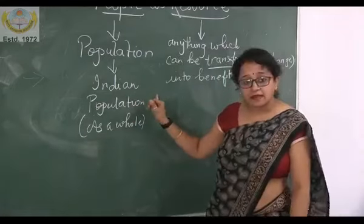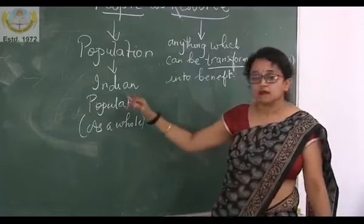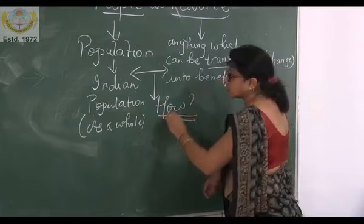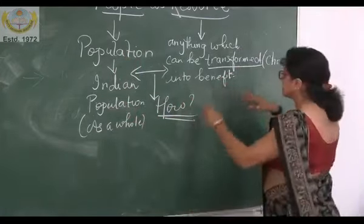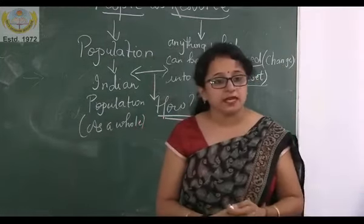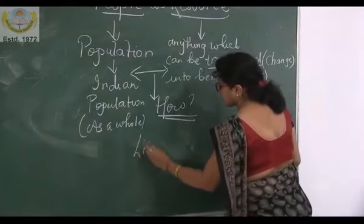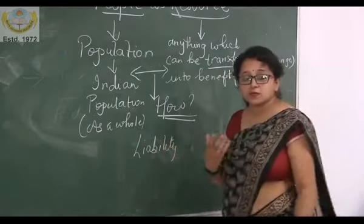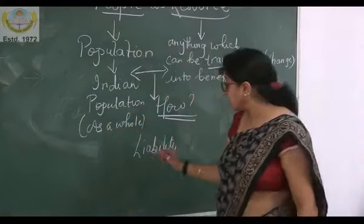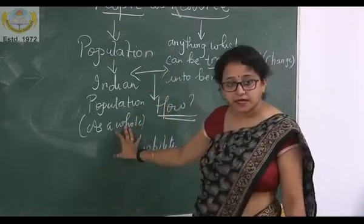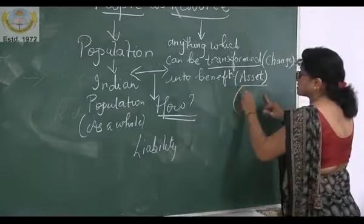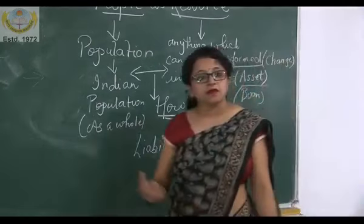We are going to understand how we can take maximum benefit from this Indian population — how can we convert this population into benefit, into an asset? Right now, what we consider is that Indian population is a liability. Liability means burden. So in this whole chapter, we are going to study how we can convert Indian population from liability to an asset — asset means boon, means benefit.